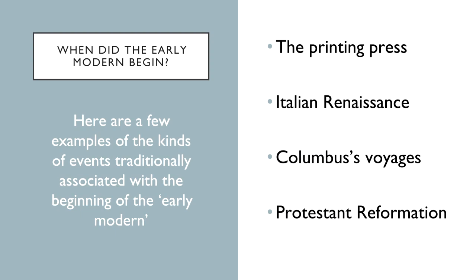We could add Columbus's voyage to the Americas, easier to date than the Renaissance at 1492, associated with the broader Age of Discovery, in which Europeans undertook long ocean voyages opening up new trade routes and possibilities for long-range migration and colonisation. To add to the printing press, the Renaissance, and Columbus, we could put the Protestant Reformation. From around 1517, when Martin Luther published his 95 Theses criticising the Catholic Church, starting religious disputes that divided Europe between those remaining loyal to the Pope and those following Luther — Lutheran, Calvinist, Anglican, Puritan — collectively coming to be known as Protestant.